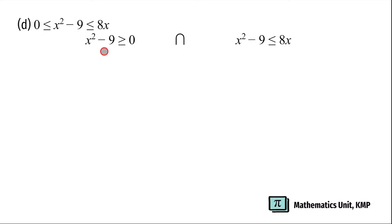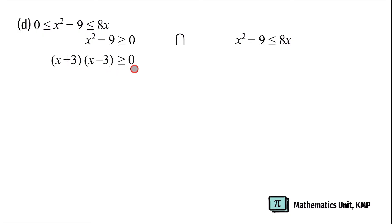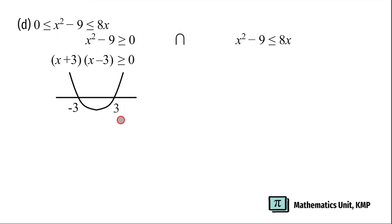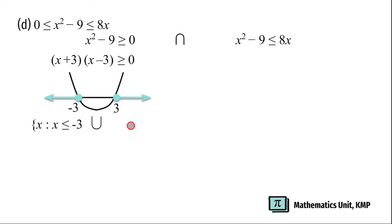Let us solve the first part: x² - 9 ≥ 0. Our a is already positive and 0 is on the right-hand side. Factorizing gives (x + 3)(x - 3) ≥ 0. Draw a smile graph. For x + 3, the x-intercept is -3, and for x - 3, the x-intercept is +3. Since y is positive, the solution is x such that x ≤ -3 union with x ≥ 3.